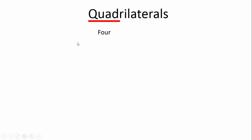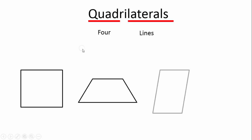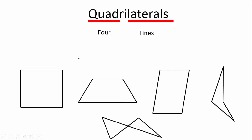Quad simply means four. Laterals means lines. So a quadrilateral is any shape with four lines. Here we have a square, trapezium, rhombus or parallelogram. Here we have a shape that's difficult to name, and even this could be a quadrilateral because there are four lines.